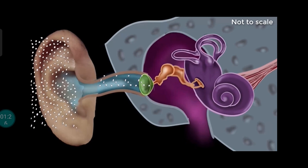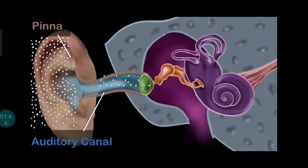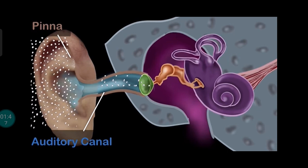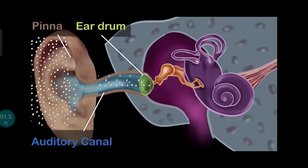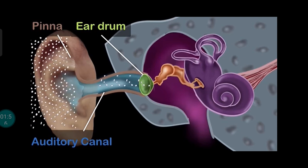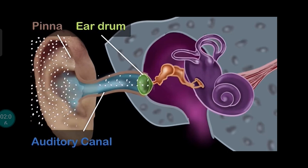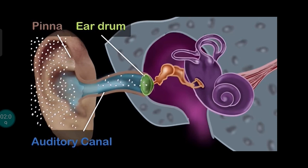The outer ear starts with the pinna — it's the part that you can see and touch, or in my case, the part that my mom would twist quite often. Its job is to collect as much sound waves as possible and channel them into the auditory canal. The sound waves pass through the auditory canal and eventually meet the eardrum, shown in green. The eardrum is a transparent membrane which is super sensitive to the vibrations of the air, so as the air vibrates, the eardrum starts vibrating just like the skin of a drum. The eardrum also separates the outer ear from the middle ear.